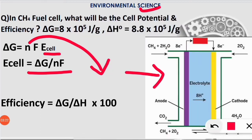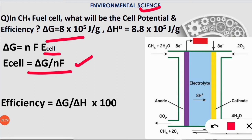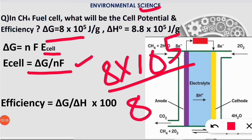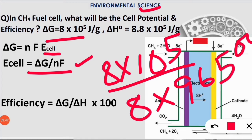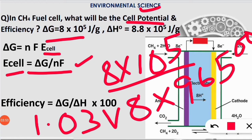To get the cell potential, divide ΔG by nF. Here ΔG = 8 × 10^5 divided by n=8 multiplied by F=96,500. After solving this, we get E_cell = 1.03 volts. You can check by solving this yourself and let me know if I'm correct or wrong.